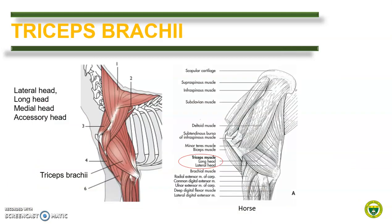Known as the strongest extensor of the elbow, the triceps brachii has three heads: the lateral, long, and the medial heads. However, in dogs, an additional accessory head is present.